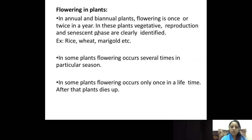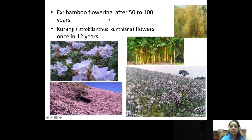For example, rice, wheat, and marigold are annual plants. In some plants, flowering occurs several times in a particular season, but in some plants — especially perennial plants — flowering occurs once in a lifetime. For example, bamboo flowers after 50 to 100 years. The flower Kuranji flowers only once in 12 years — it flowered in 2008, then 2016, and next will be 2030. You can see how the whole mountain or hill is covered with Kuranji flowers, a scene possible only once in 12 years.